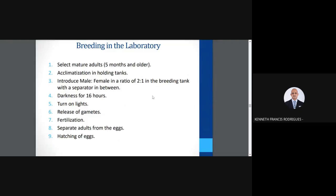Breeding in the laboratory involves fertilization. When conducting experiments with zebrafish, we utilize light as a cue because light induces breeding. We select mature adults that are five months and older. You identify female and male by looking at the fish tank from above: females have a slightly enlarged belly indicating they are fecund, while males are generally slender. After selecting mature adults, you do a process known as acclimatization in holding tanks.